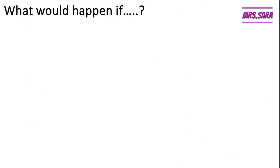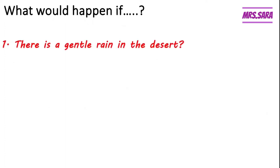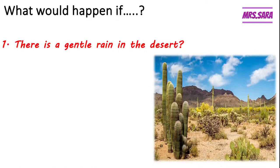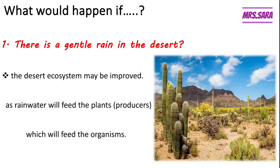What would happen if there is a gentle rain in the desert? In the desert, you can see green plants like cactus. If there is a gentle rain in the desert, the desert ecosystem may be improved as the rainwater will feed the plants — the producers — like the cactus, which will feed the organisms like other animals.